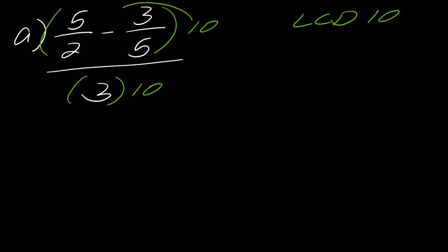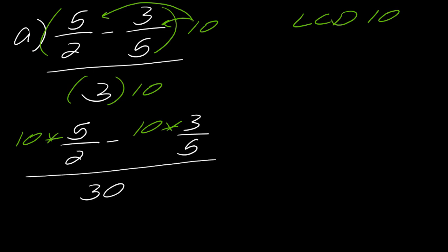Basically what I'm going to do now is distribute this 10 to each fraction. So what I get is I have 10 times five halves minus 10 times three fifths. And then in the bottom, three times 10 is just going to be 30. The idea behind this is that the denominators are going to cancel out with the 10. Two goes into 10 five times.